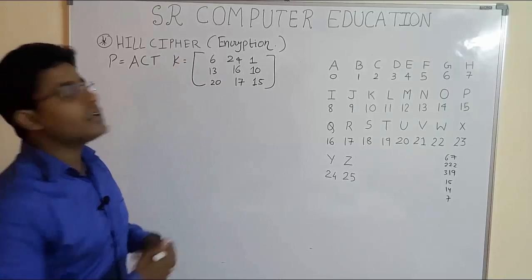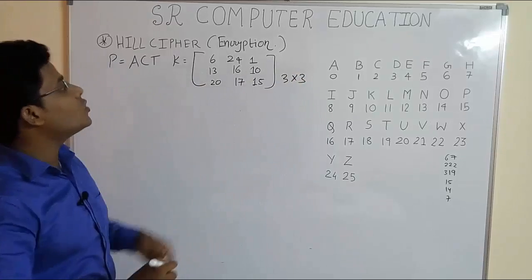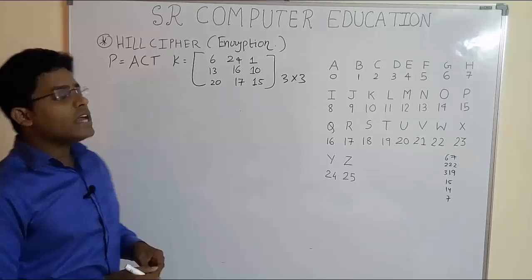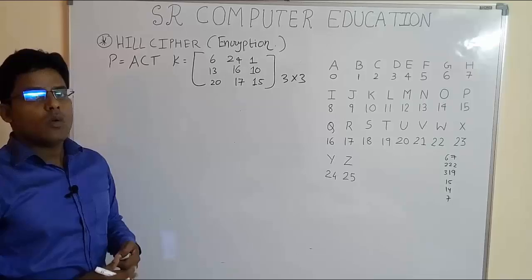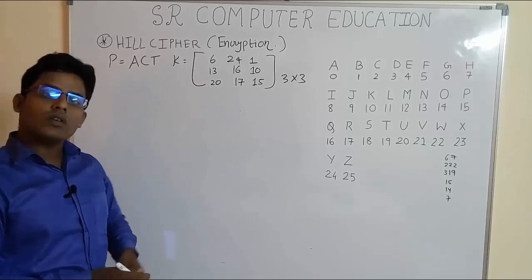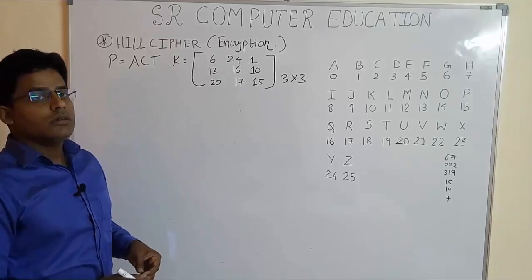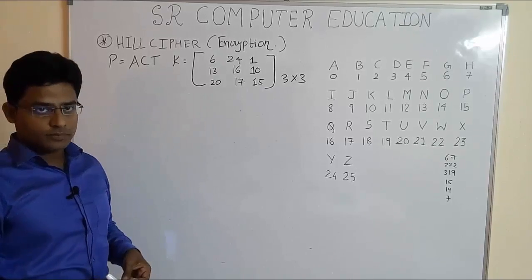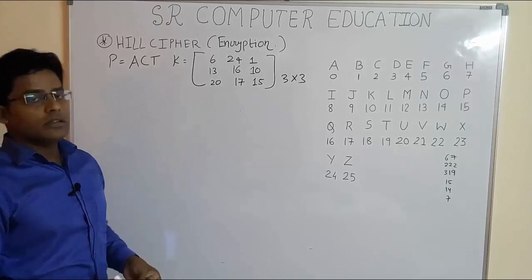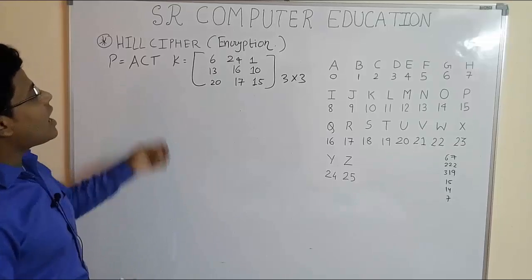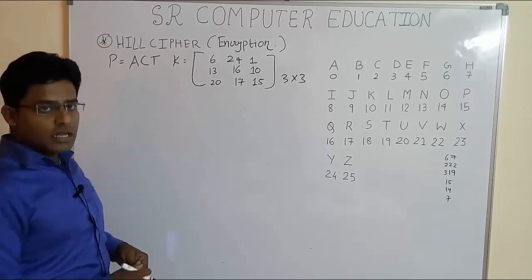Now here the given matrix is 3×3, meaning three rows and three columns. In examinations, two types of questions are asked in Hill cipher: one when the given matrix is 2×2, which is quite simple, and the other when the given matrix is 3×3. Let's see how to do encryption when the given matrix is 3×3.